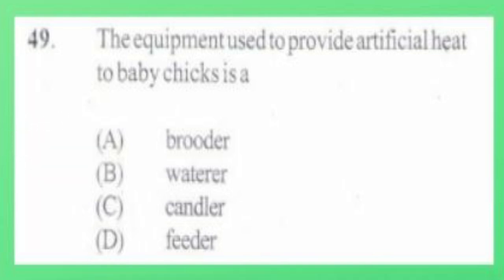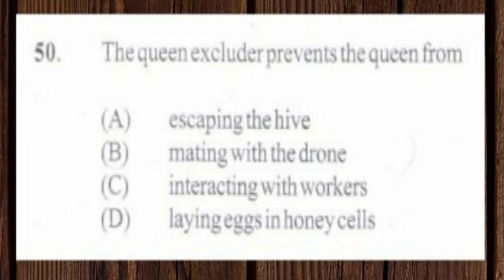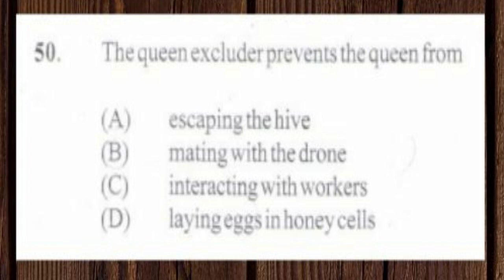Question number 50. The queen excluder prevents the queen from: A. Escaping the hive, B. Mating with the drone, C. Interacting with workers, D. Laying eggs in the honey cells. The answer is D, laying eggs in the honey cells. You put on your queen excluder when it's honey season because you don't want the queen to go into the honey super to lay eggs. The excluder has very small holes that only workers can pass through, but not the queen.